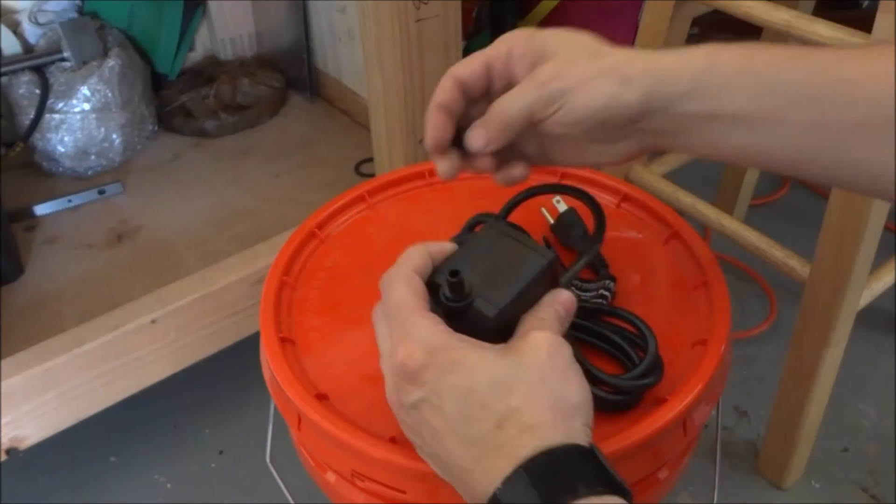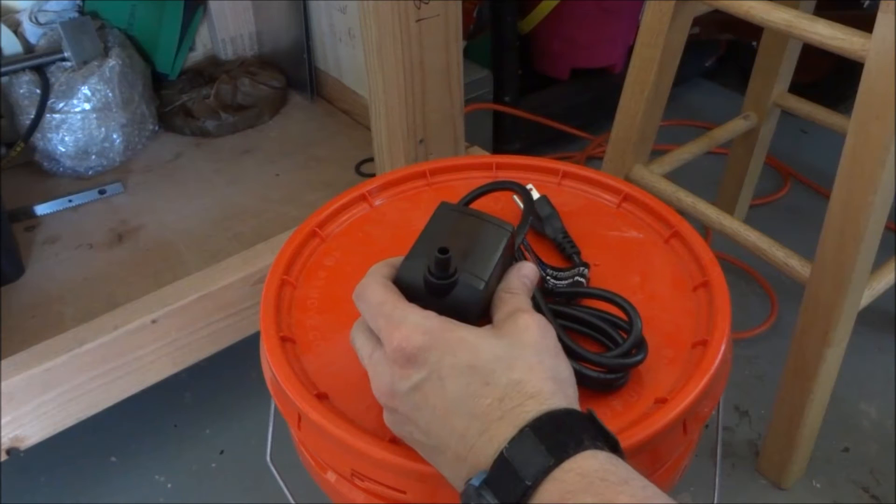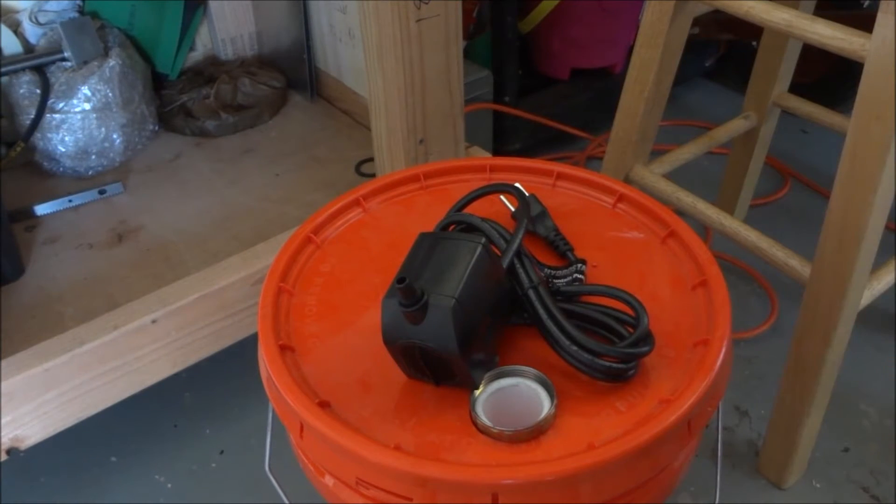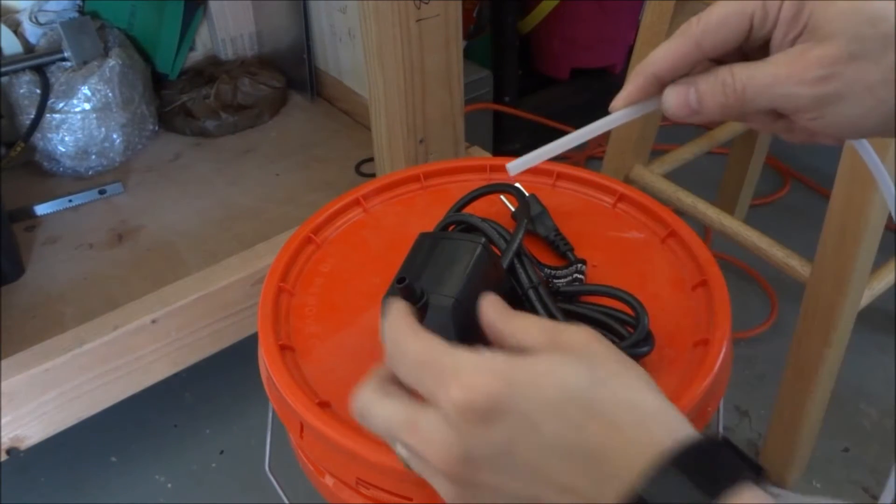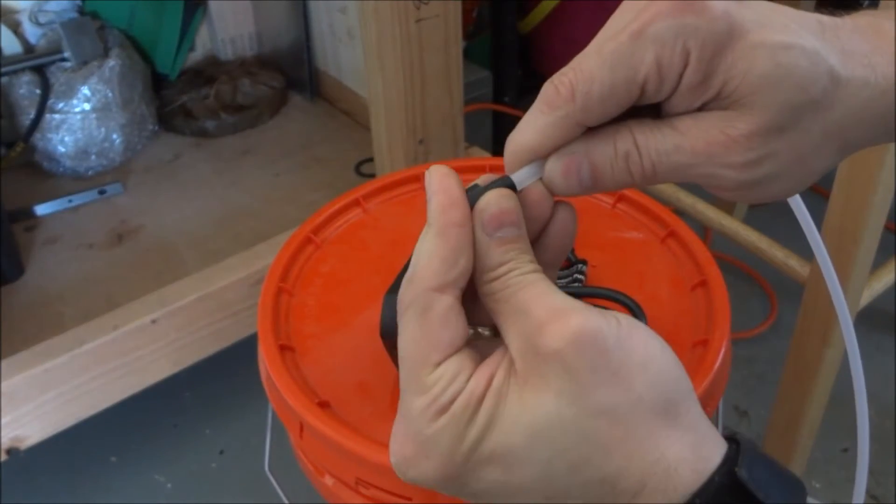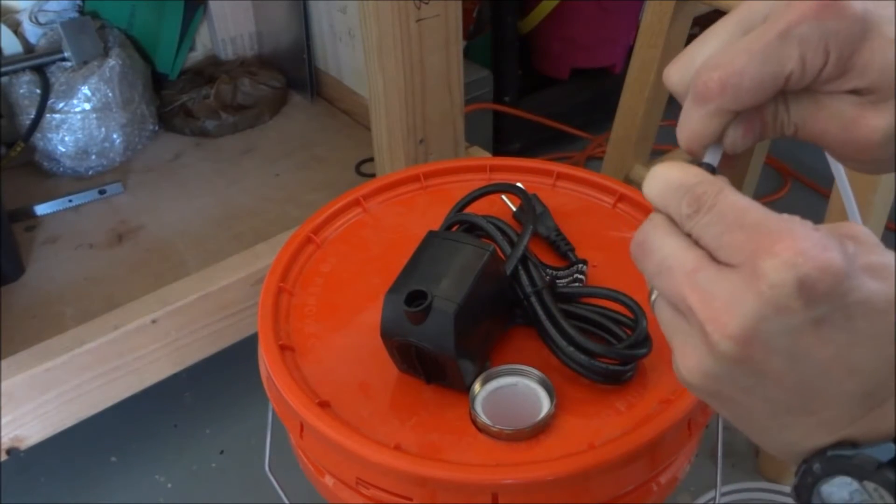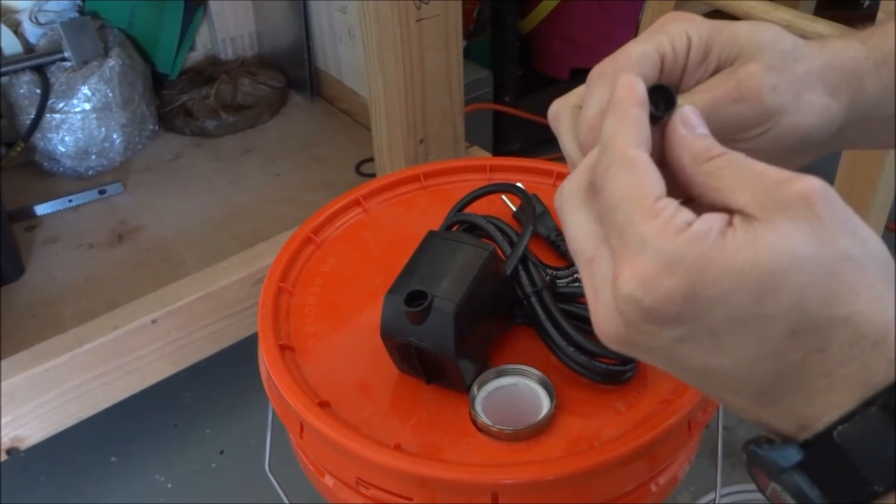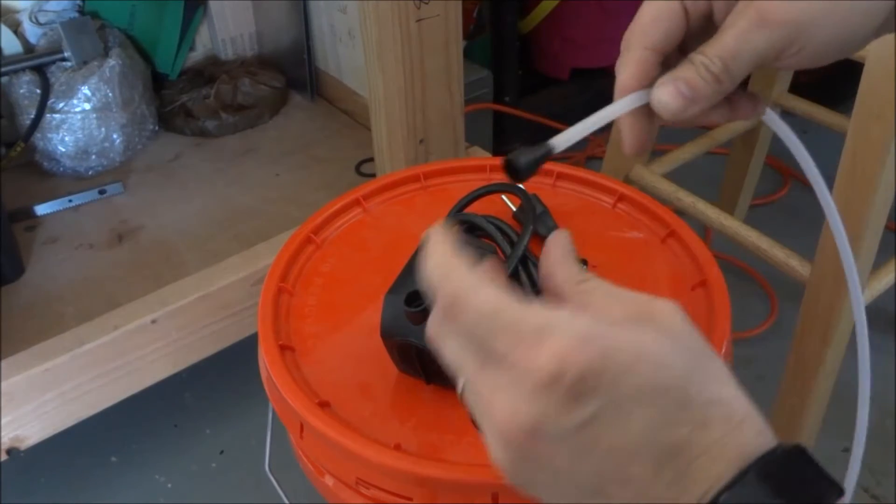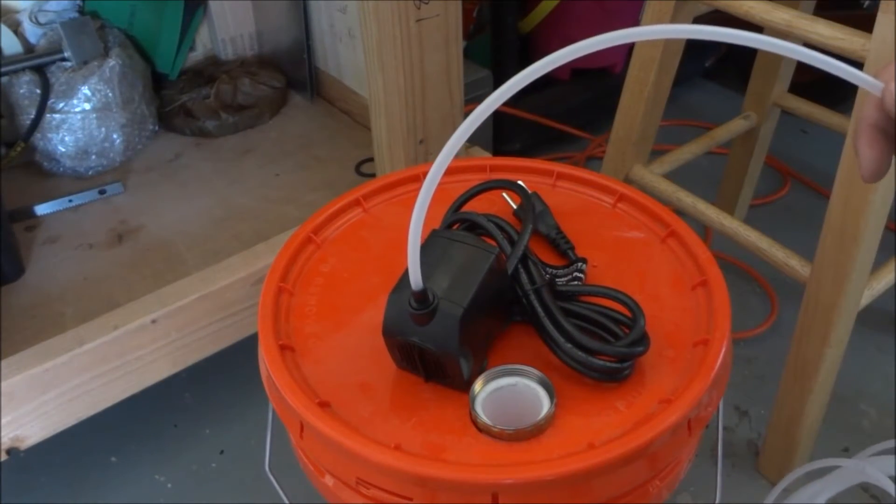So we're not going to use this big one. We're actually going to use this little one because it appears we'll be able to just take our tubing and slide it through here. Pretty tight but it goes right in there, and that'll just hold our tubing in. So that takes care of that.